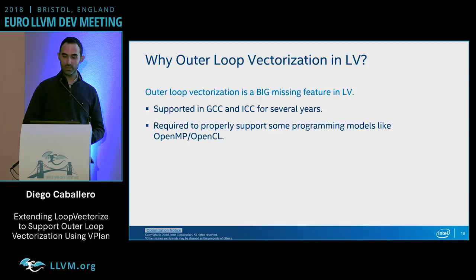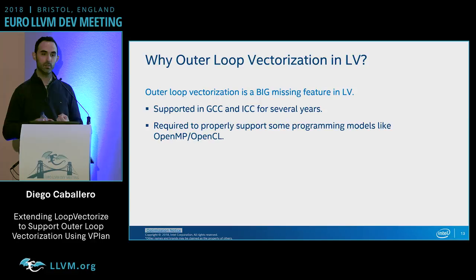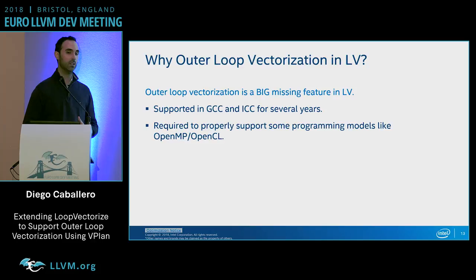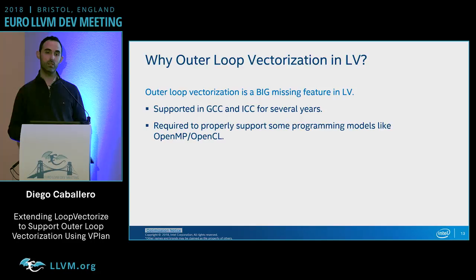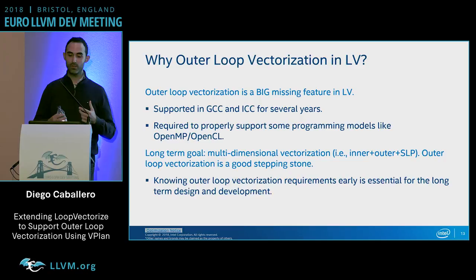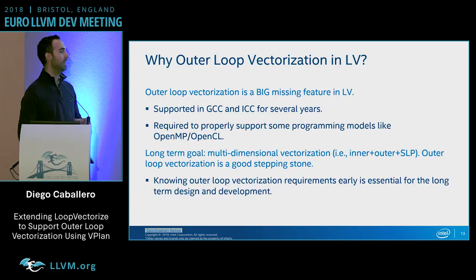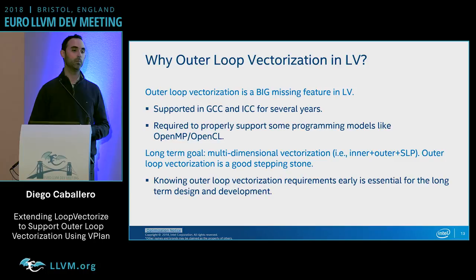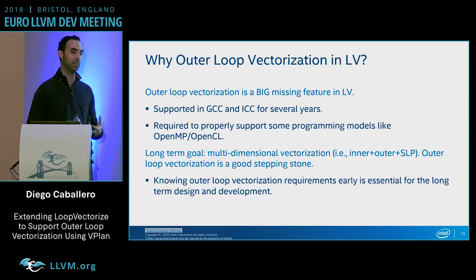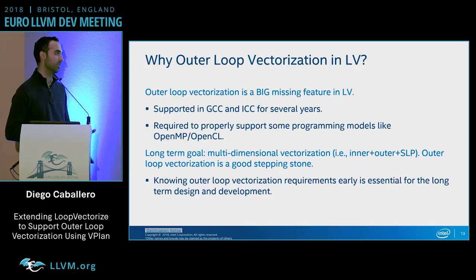Why outer loop vectorization in LV? Outer loop vectorization is a big missing feature — it's been supported in GCC and ICC for years. It's required to properly support programming models like OpenMP or OpenCL. If a user annotates an outer loop with pragma OMP SIMD and we don't support it, we can't do anything. Our long-term goal is multi-dimensional vectorization — vectorizing several loops simultaneously including inner, outer, and SLP trees. Knowing outer loop requirements early will help us have a better vPlan design.